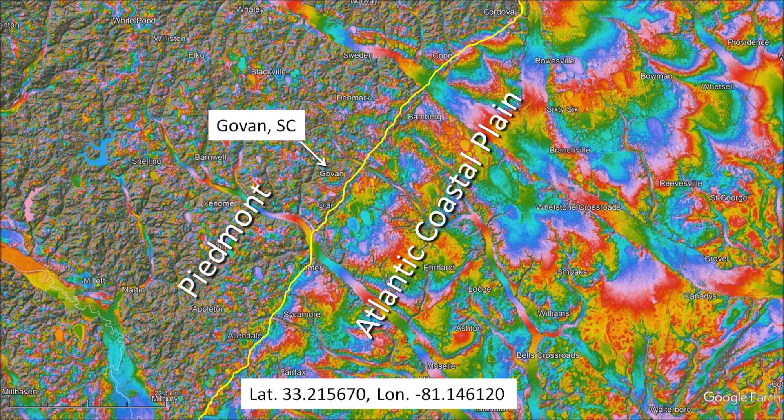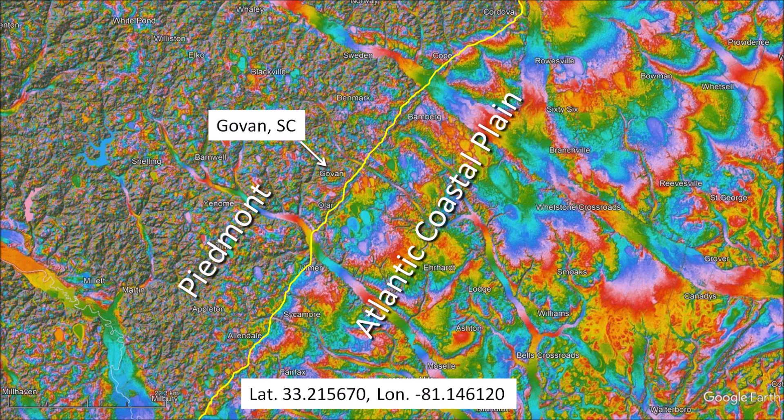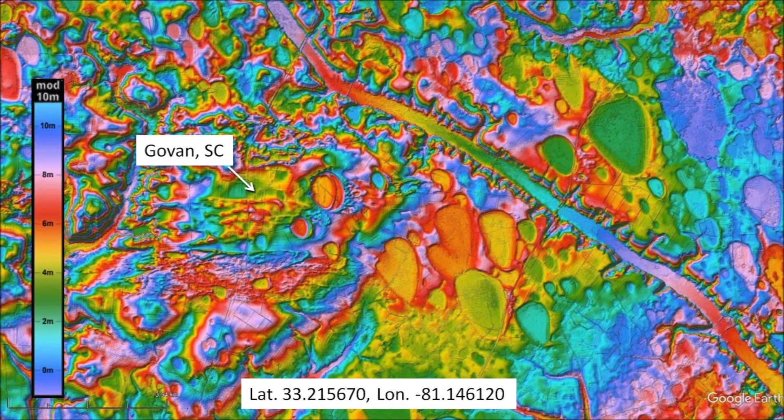This LiDAR image shows a very clear demarcation between the relatively flat terrain of the Atlantic Coastal Plain and the hilly terrain of the Piedmont. Govan, South Carolina is located close to this geographic transition point. A closer look at this transition zone reveals a landscape with many deformed Carolina Bays and windblown sand sheets. The topography in this image is represented by a color spectrum that repeats for every 10 meters of elevation, making it easy to identify the flat centers of the bays.